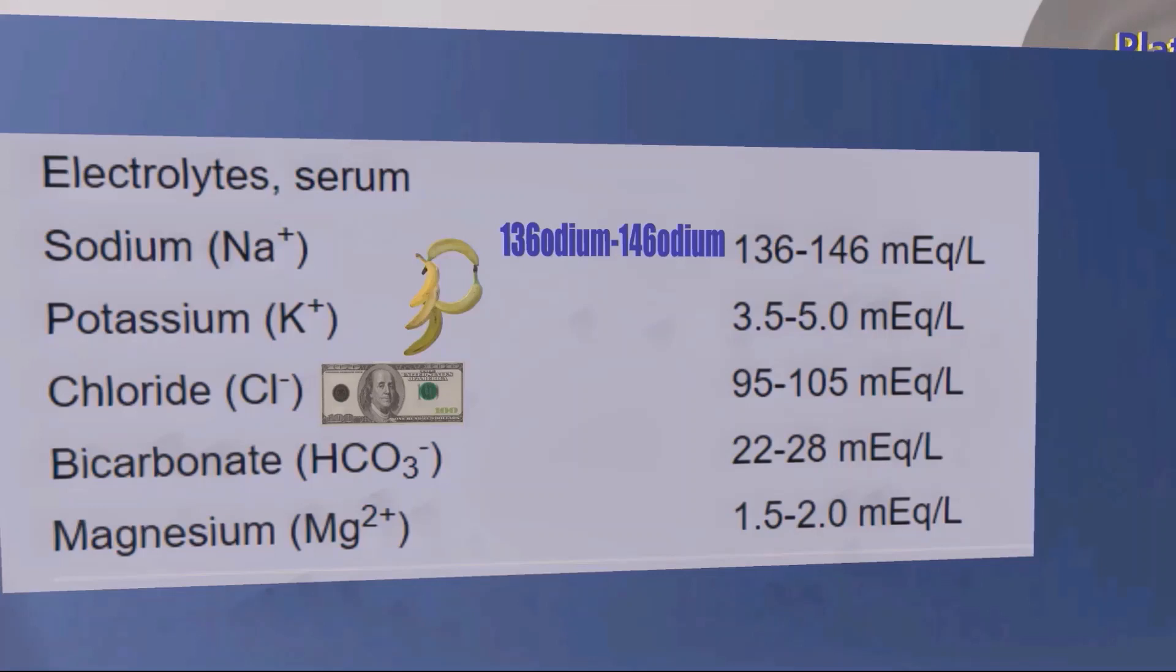Potassium, we've taken bananas which have potassium and we've made a P for potassium. The reason why we've used bananas is because bananas are high in potassium, and we've used about five bananas or maybe 3.5 bananas, whatever, 3.5 to 5 bananas in order to make this P, which reminds us that normal range of potassium is 3.5 to 5. Chloride, well we put a hundred dollar bill over here, that chloride levels should be about a hundred. Perhaps someone spent a hundred dollars on chlorine for a pool. Anyway, chloride levels should be about a hundred, 95 to 105.